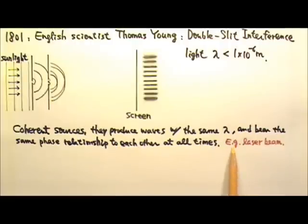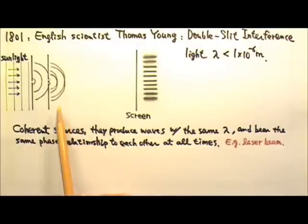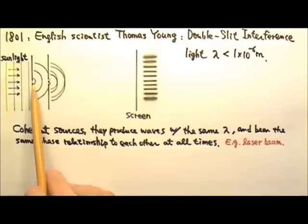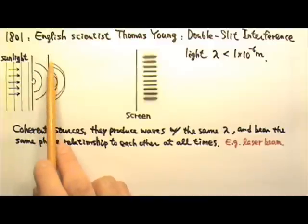An example of coherent source is a laser beam. A laser beam is coherent light source because the light in an entire laser beam has the same phase. However, sunlight or the light from a light bulb are incoherent. That's why in Thomas Young's experiment, he had to make sunlight go through a single slit first. After that single slit, the wavelet would provide a coherent source for the double slits.